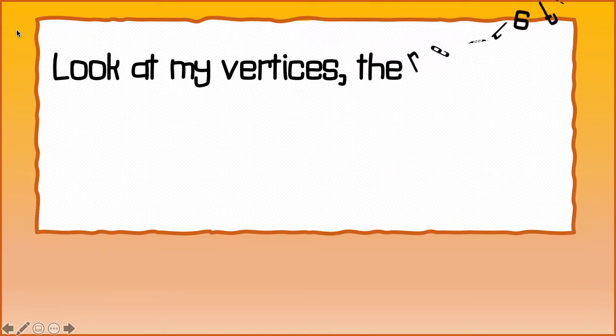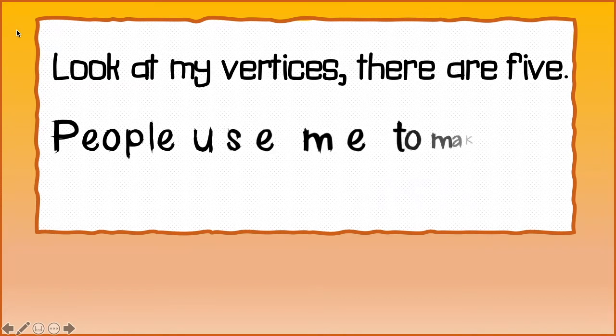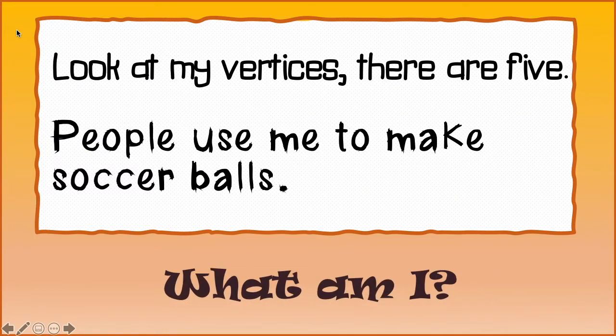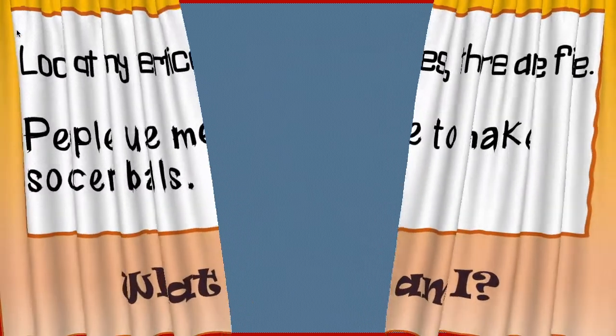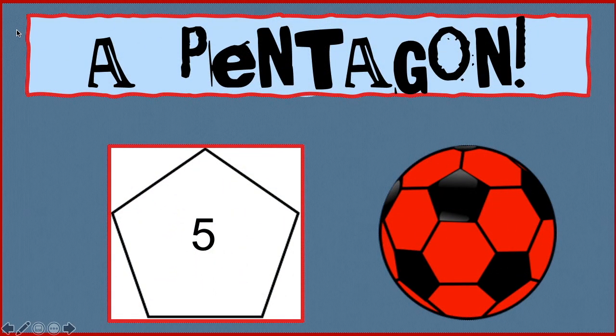Here is riddle number four. Look at my vertices. They are five. People use me to make soccer balls. What am I? A pentagon. Good job.